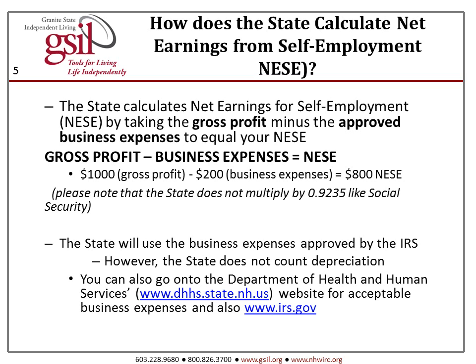How does the State calculate NSEE? The State calculates NSEE by taking the gross profit minus the approved business expenses to equal NSEE. Please note that the State, unlike Social Security, does not multiply by .9235, because Social Security multiplies by that number since you are paying double the Social Security tax. For example, $1,000 gross profit minus $200 business expenses equals $800 of net earnings from self-employment. The State will use business expenses approved by the IRS; however, the State does not count depreciation. See www.dhhs.state.nh.us or www.irs.gov for acceptable business expenses.